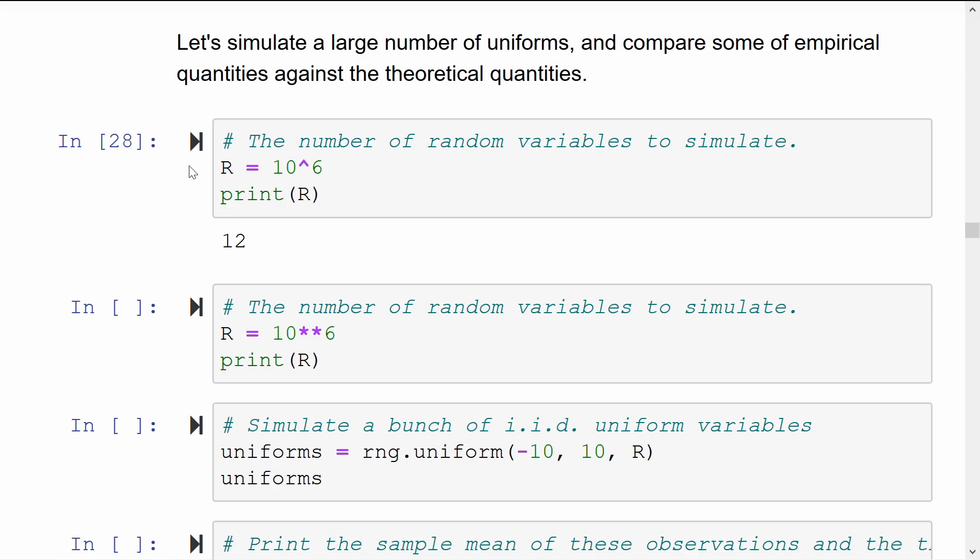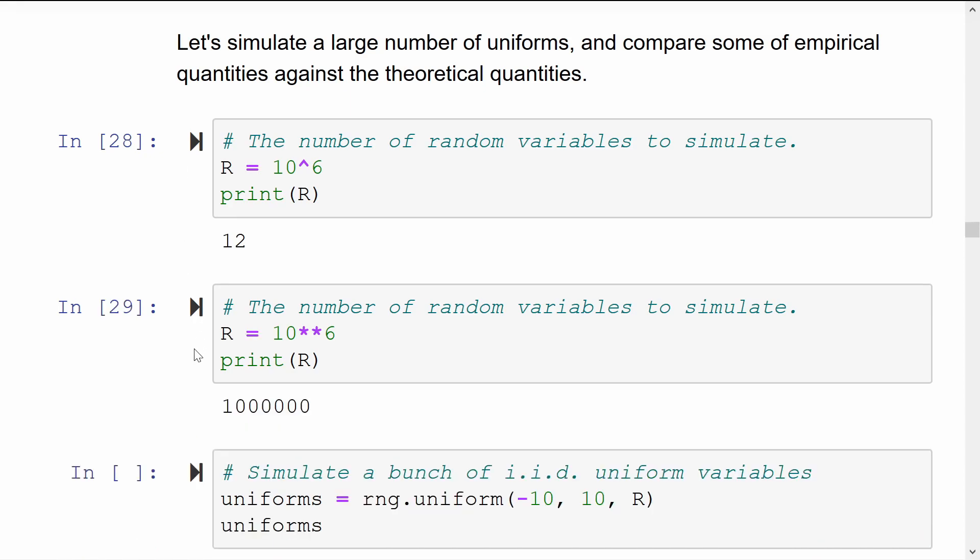Well, I love Python and I want to defend it to all its strange decisions, but I can't defend this one. To do one number to the power of another in Python, you're forced to use a double star notation, 10 star star 6. If you use this up arrow that I did the first time, then Python interprets this to be some kind of bitwise operation. And that's totally useless for our purposes. So just remember to use the double star.